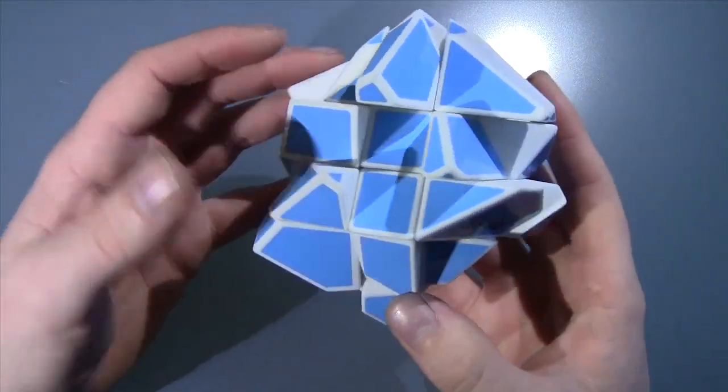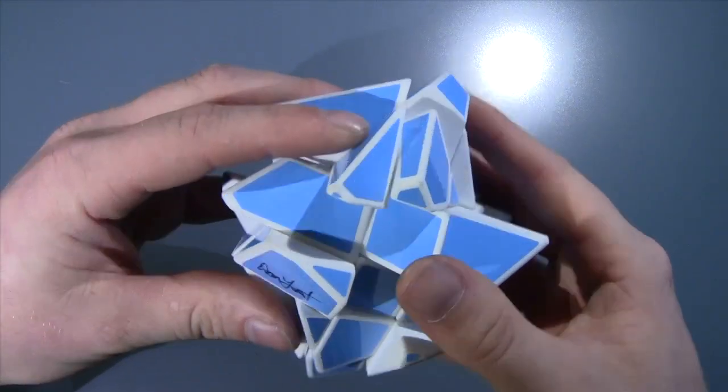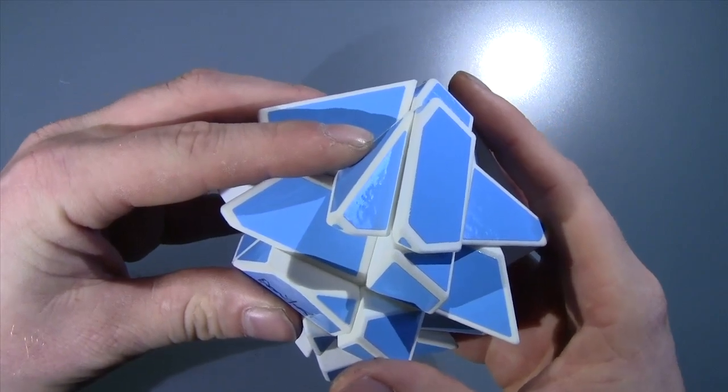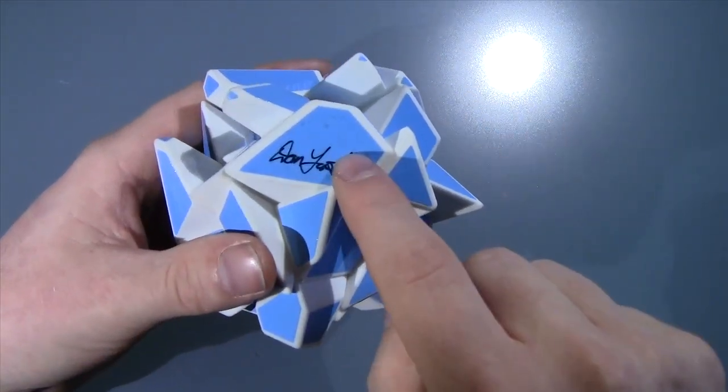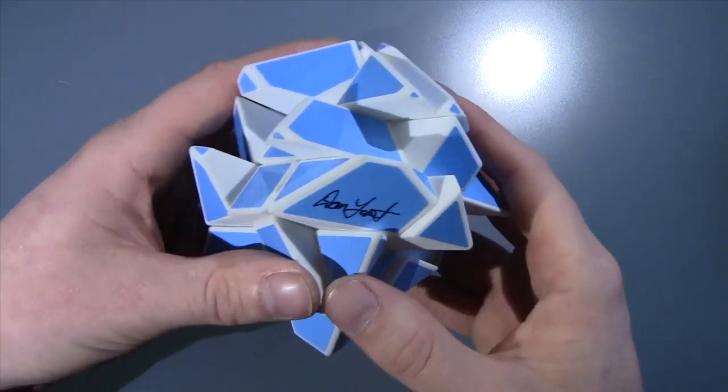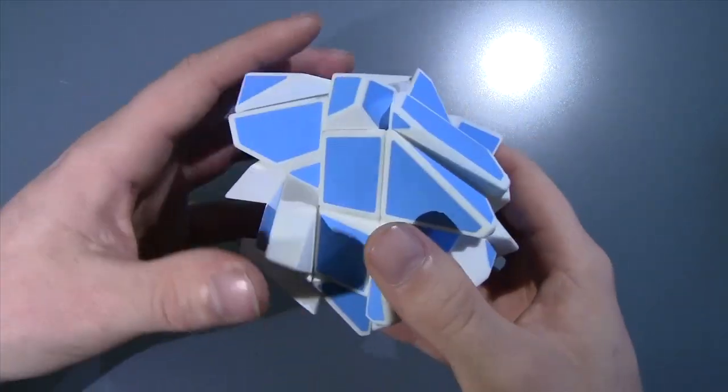Now if any of you guys wanted to buy one of these assembled from me, of course I can do that for an extra charge because I have to pay for all of the products, stickers, shipping, taxes, and my time to do it. If you want I can sign it, or you can buy this one of course with the stand. You can email me at crazybadcuber at gmail.com and I can give you a price for that.